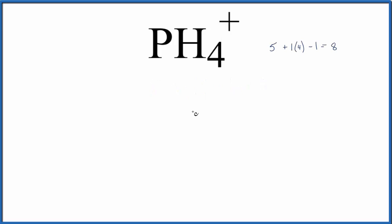We'll put phosphorus at the center of our Lewis structure. Hydrogens always go on the outside and we have four hydrogens. So let's place those around the phosphorus.